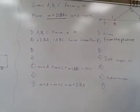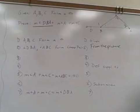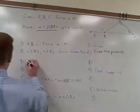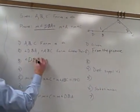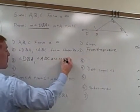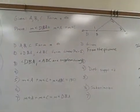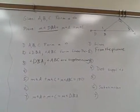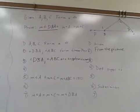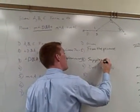Without me having to pull all my hair out, how does it help me to know that I have a linear pair? Because it means that they're supplementary. So angle DBA and angle ABC are supplementary. Why do I get to say that? Definition of a linear pair.